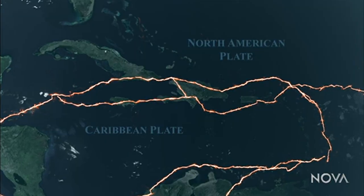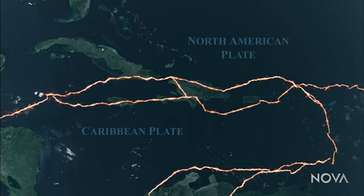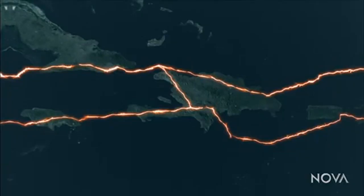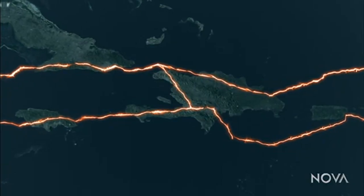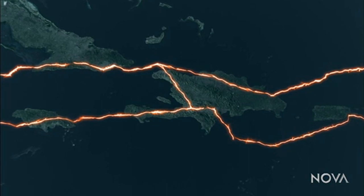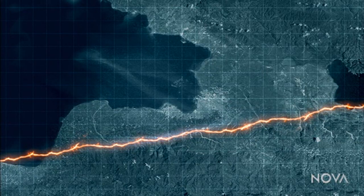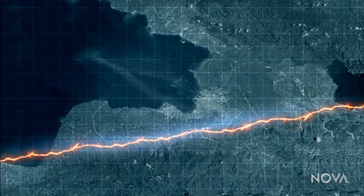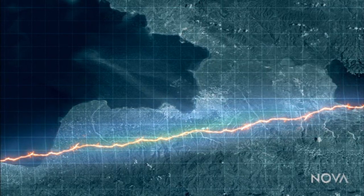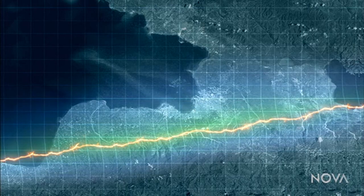Haiti lies directly above a network of massive faults, where the Caribbean plate meets the North American plate. As the plates slowly creep past one another, the rock distorts and stretches like rubber, building up enormous stress.